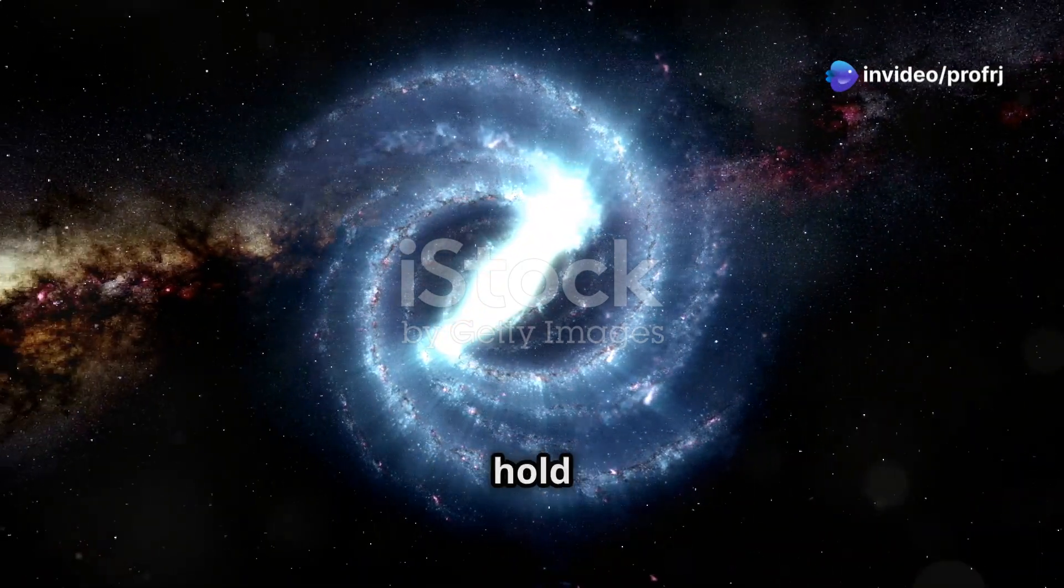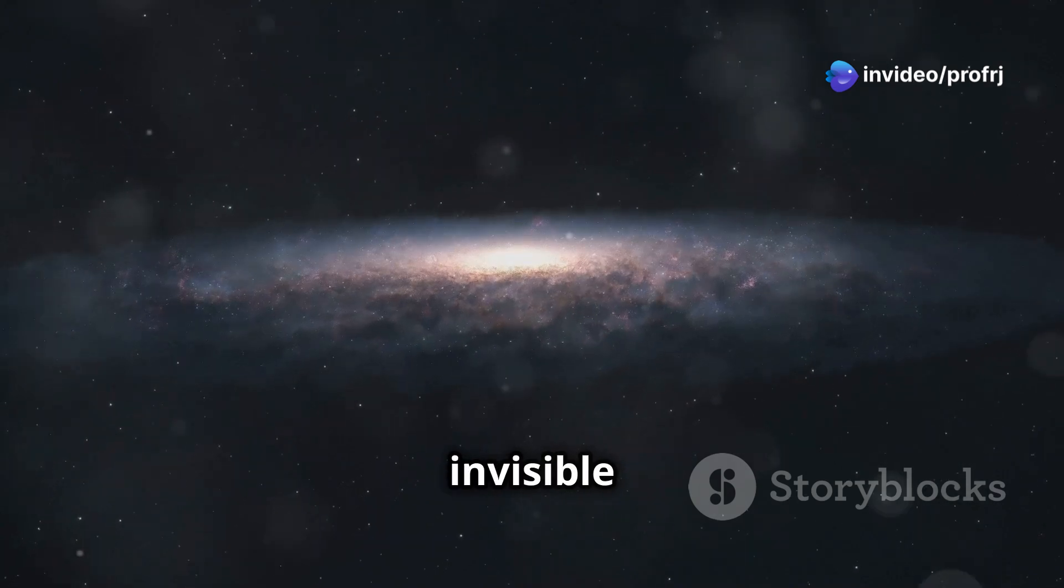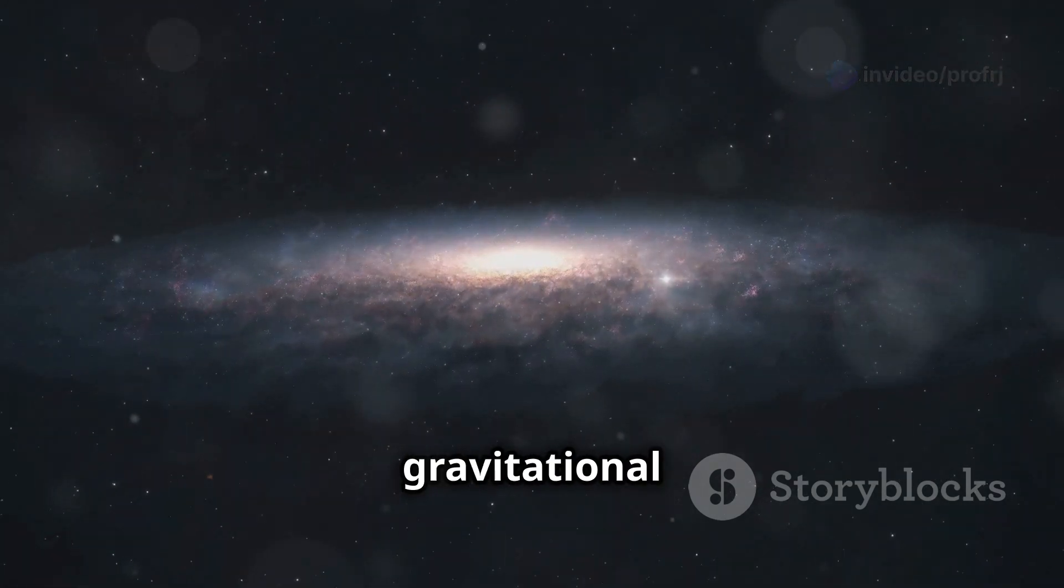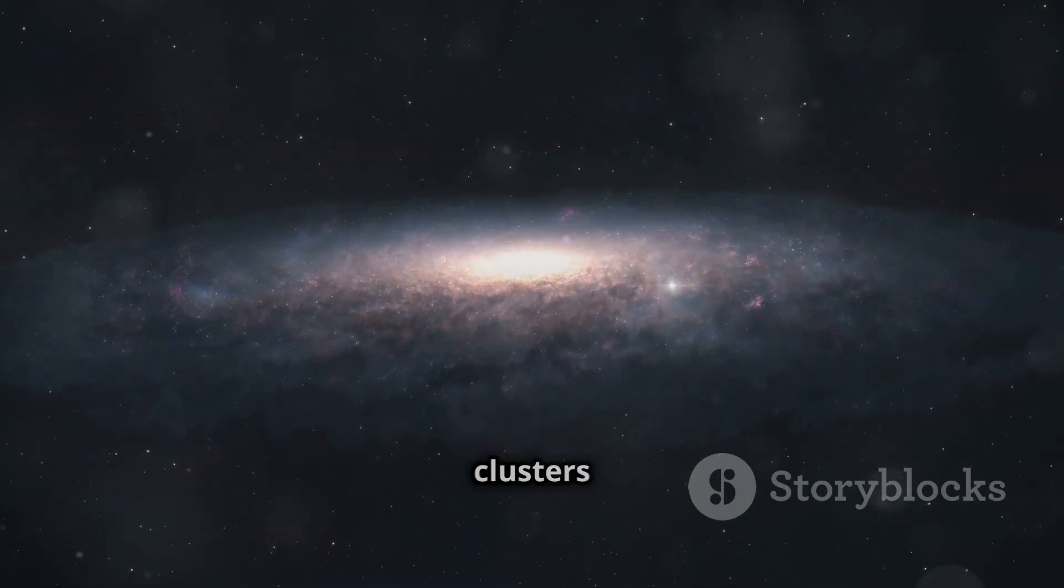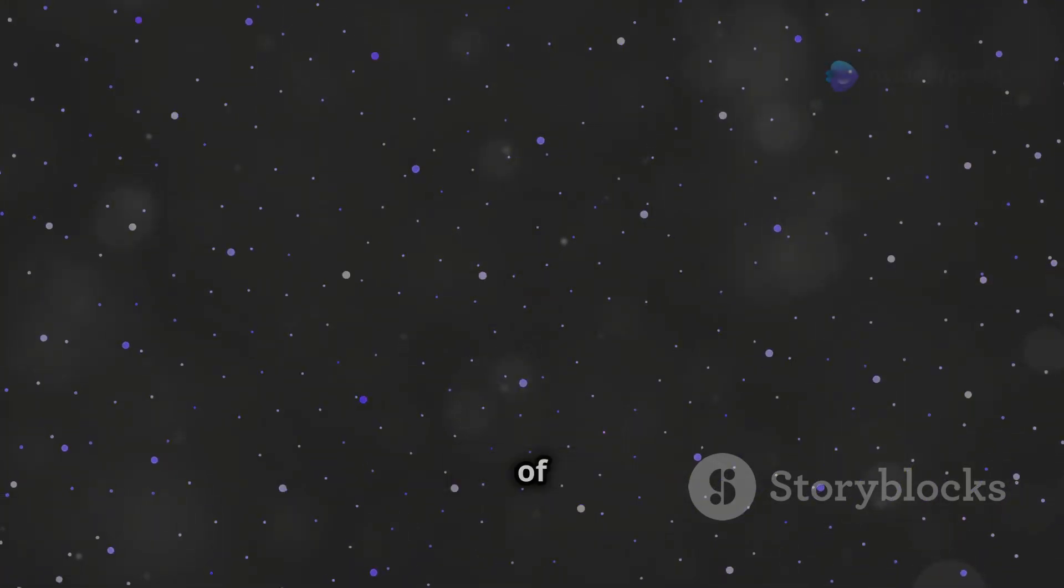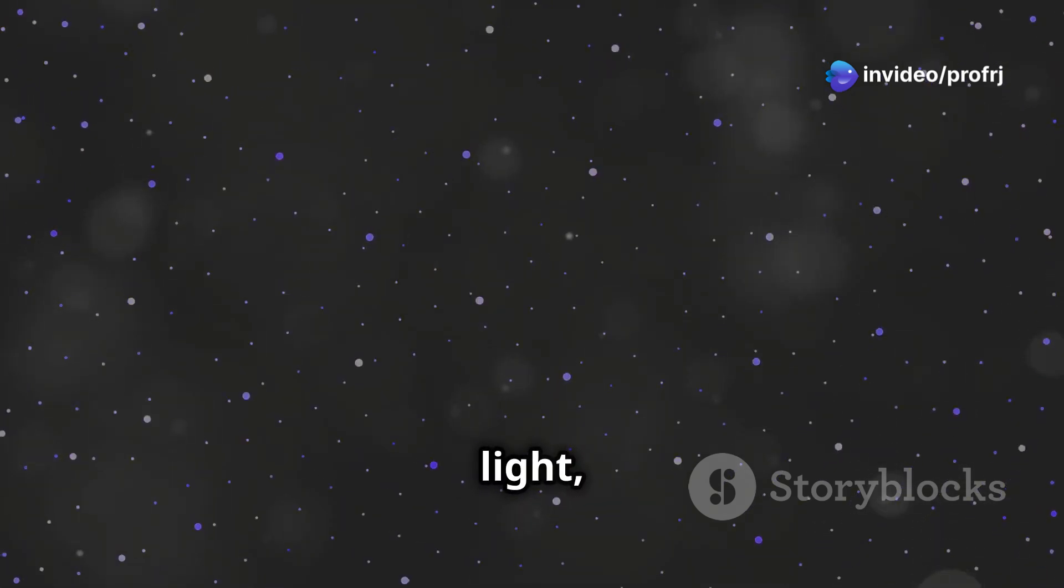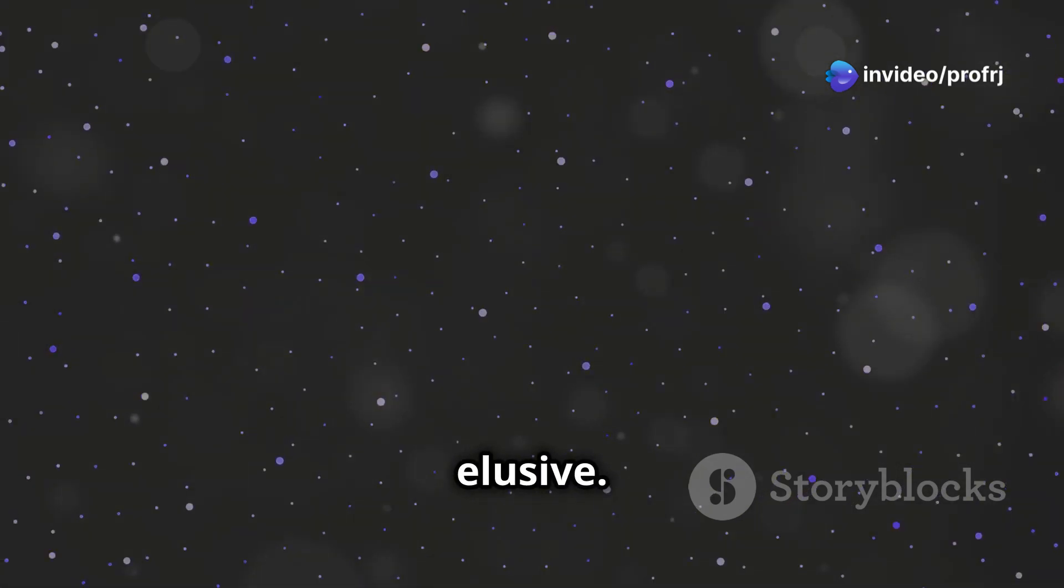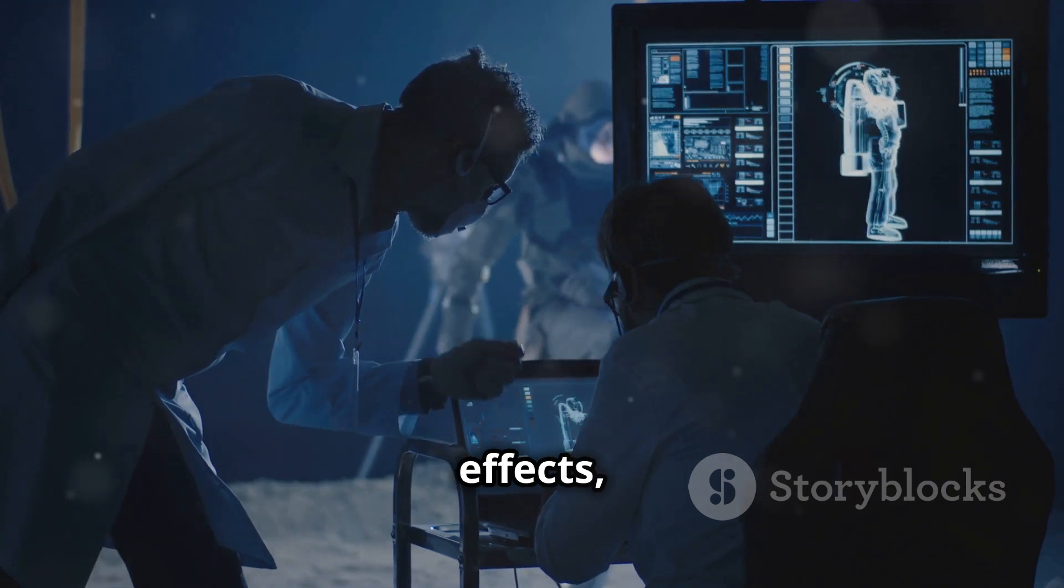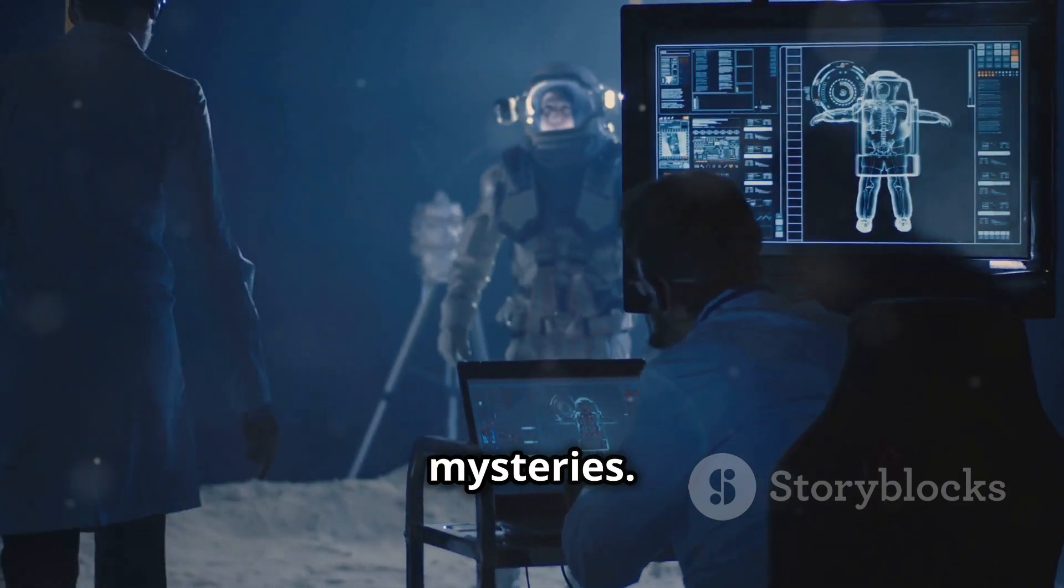Scientists have discovered that galaxies wouldn't hold together with just ordinary matter. Enter dark matter: an invisible substance that provides the gravitational glue holding galaxies and galaxy clusters in place. Dark matter makes up about 27% of the universe, yet it doesn't emit, absorb, or reflect light, making it incredibly elusive. We know it exists because of its gravitational effects, but its true nature remains one of science's greatest mysteries.